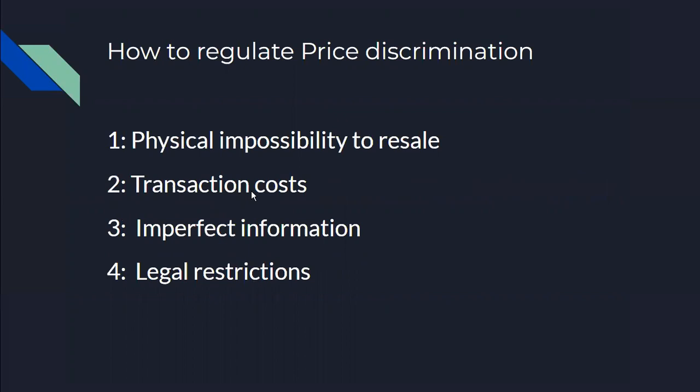How do we regulate price discrimination? There are four necessary market frictions. The first is physical impossibility to resell — meaning we cannot sell the item second-hand. The second is transaction costs. The third is imperfect information, meaning buyers and sellers do not share the same information. The fourth is legal restrictions.